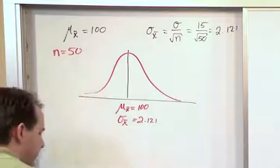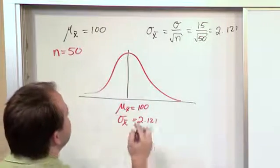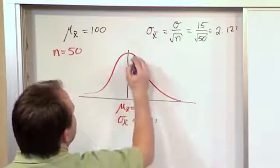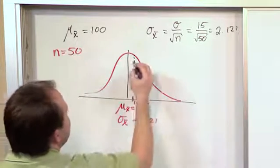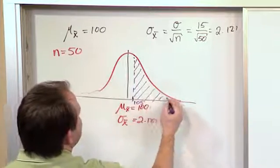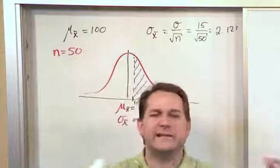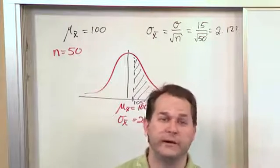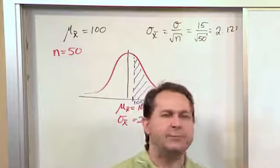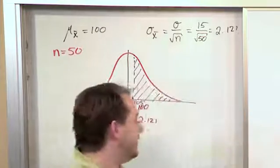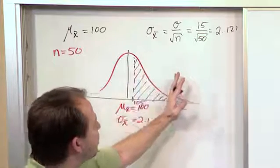The question is asking us: what is the probability that a sample of these 50 people will have an average IQ greater than 105? The center is at 100, so let's mark 105 just above that. We're asking what is the probability that a sample of 50 people will be greater than 105. We create a sampling distribution of sample means with 50 people in each sample, and we want to find the area under the curve to the right of 105.